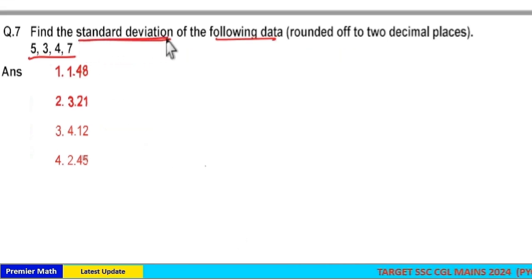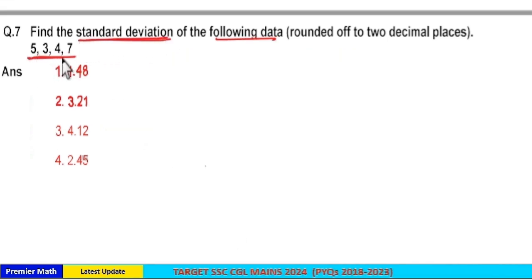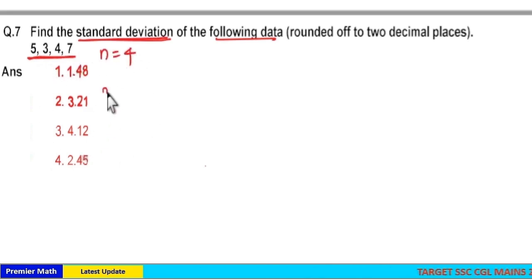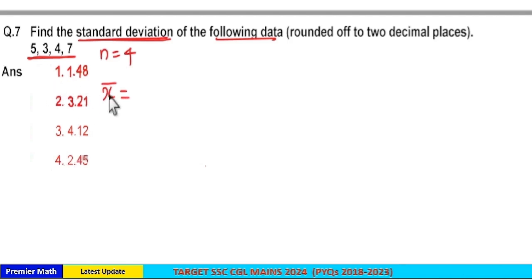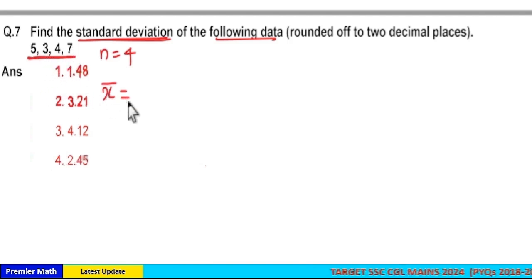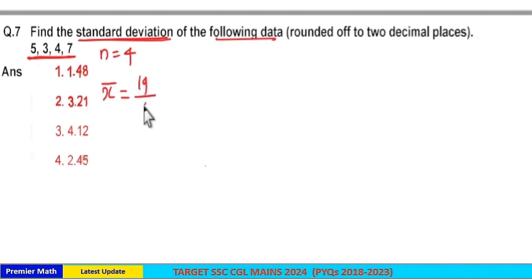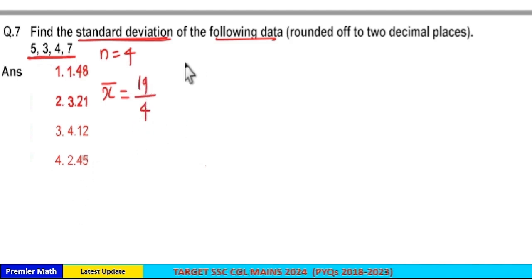We can calculate the standard deviation of the given samples 5, 3, 4, 7. Here, the number of samples is equal to 4. Now calculate the mean of the given sample. Mean means the average of the given samples, which is 5 plus 3 plus 4 plus 7 equals 19, and the total number of samples is 4, so the mean is 19 by 4.